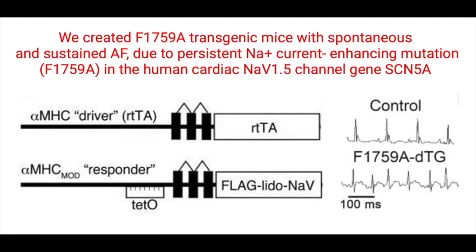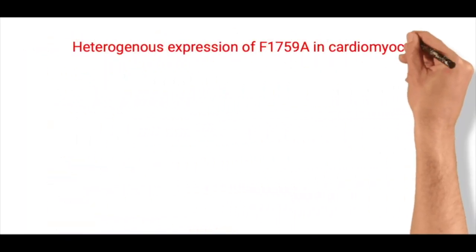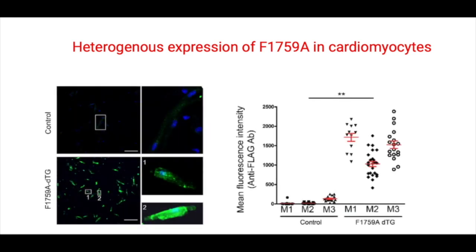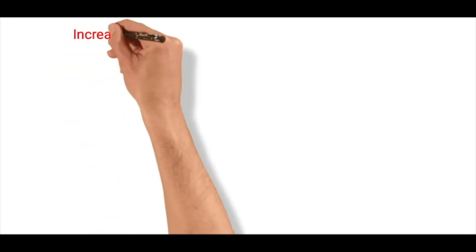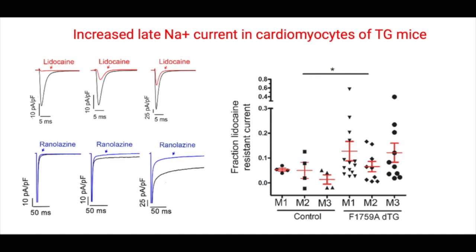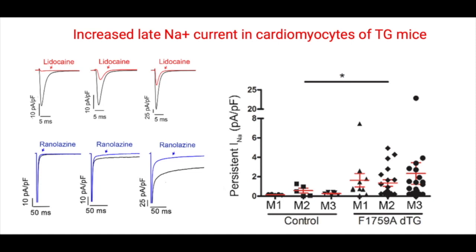The double transgenic mice also exhibited mitochondrial necrosis, which subsequently led to spontaneous and prolonged episodes of atrial fibrillation. The expression of the F1759A sodium channel mutation in the absence of doxycycline is likely low due to low basal binding of the RTTA protein to the tet operator sequences, thus resulting in some sort of basal leak. The F1759A mutation enabled us to distinguish the functional characteristics of the transgenic sodium channels, which were relatively resistant to local anesthetics such as lidocaine, from the endogenous channels present in the mouse.